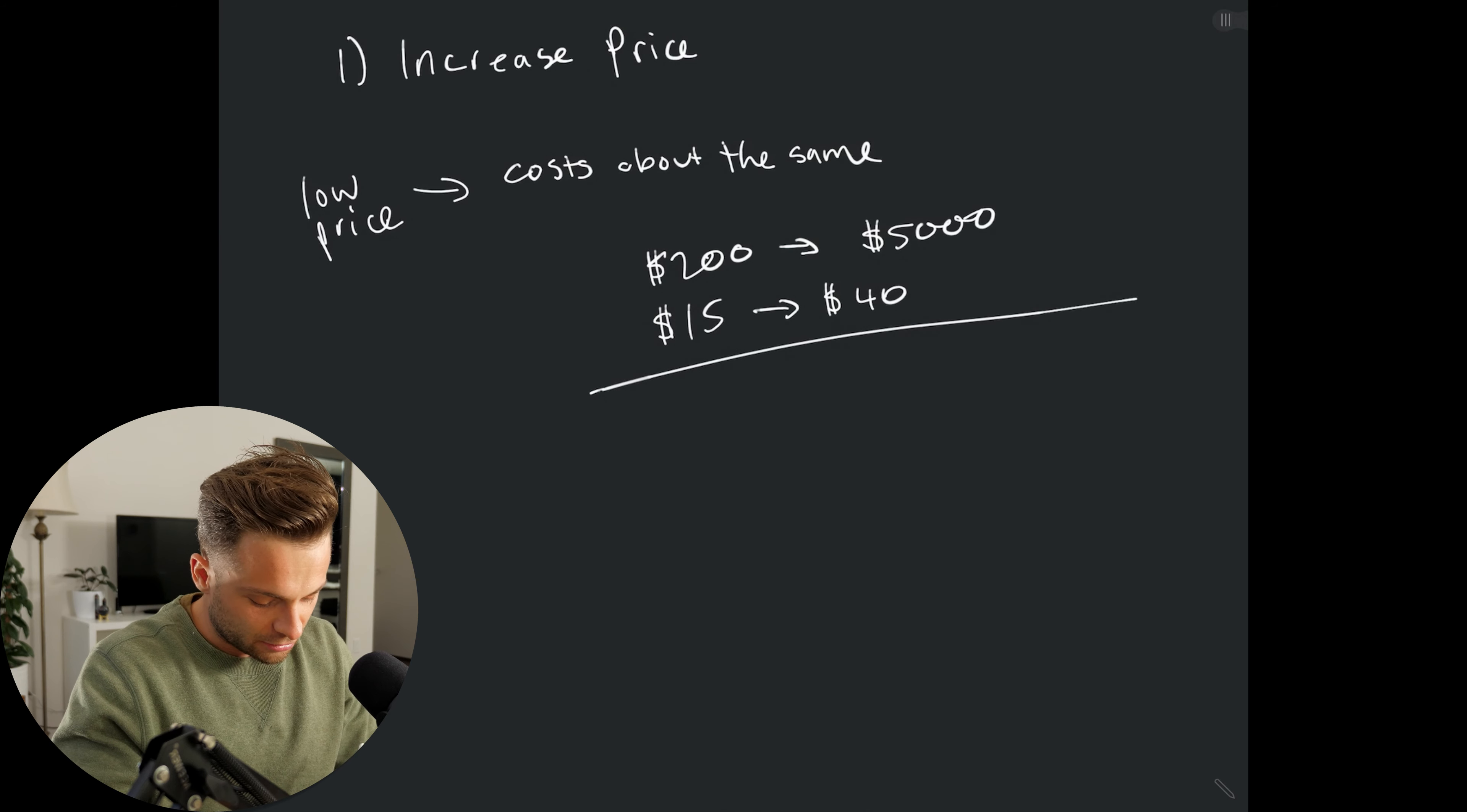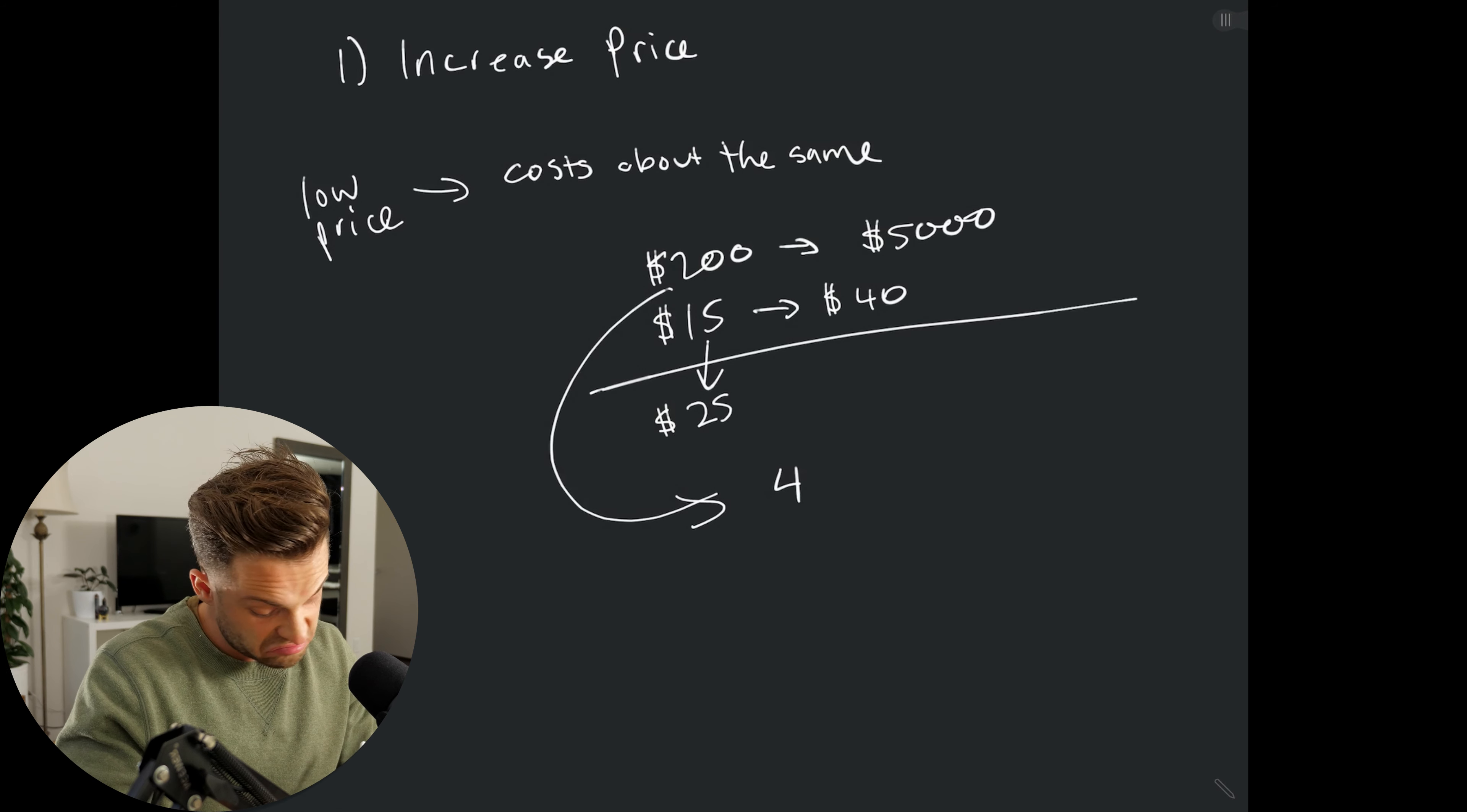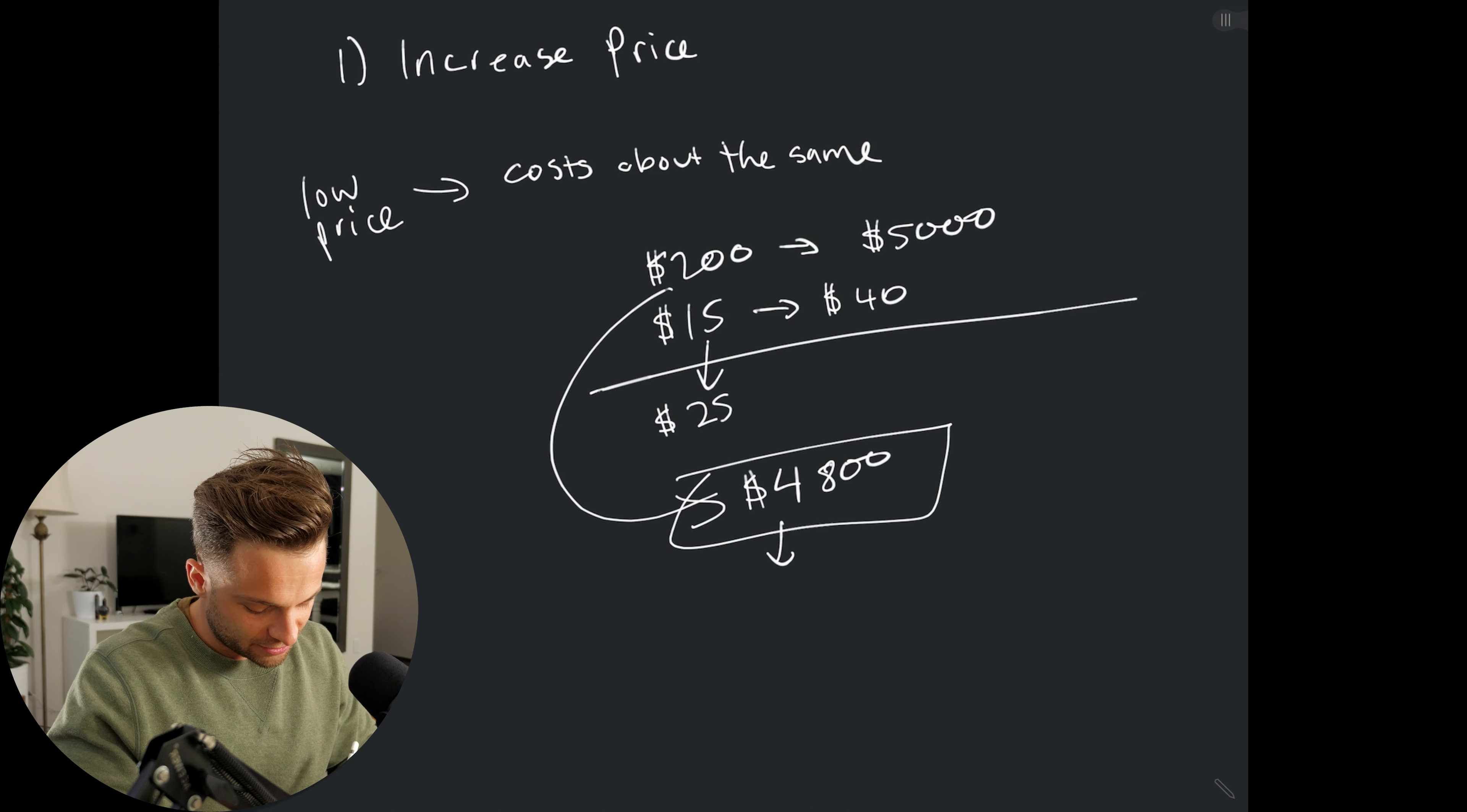Now, if we actually look at the profitability of this, Walmart is making $25 a bag, whereas Gucci is making like $4,800 a bag. Now, which kind of business would you rather be in? Which one is easier to scale? Well, obviously, it's going to be Gucci. And why is that? Because they have a higher LTV.